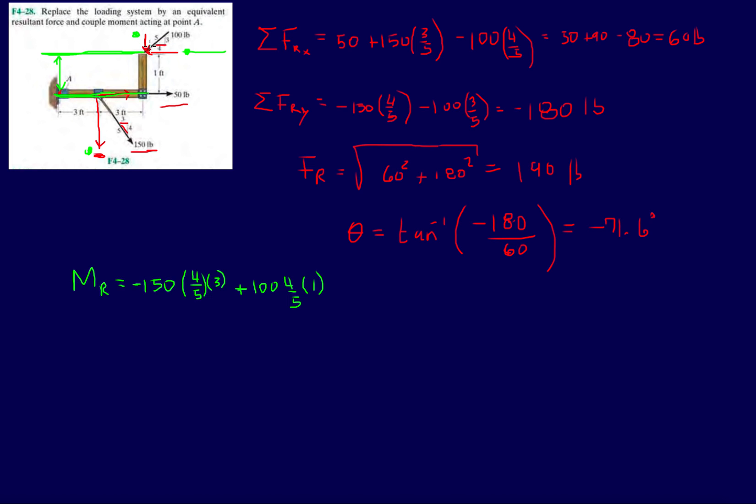Last but not least, we have the vertical component of that 100 pound force, which is trying to make it rotate in a clockwise direction, so negative. It's going to be 100 pounds times three over five. And then times, if we extend the line of action, it's going to be this distance in green, which is six feet.